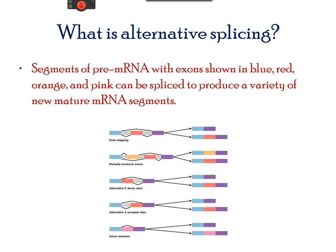In the late 1970s, it was observed that different proteins can be formed from one gene through different combinations of exons during RNA processing, a process known as alternative splicing.